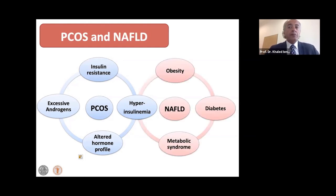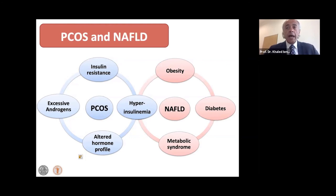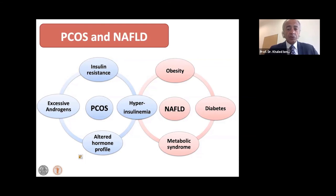It is reported that 40 to 50% of women with PCOS also have NAFLD, and this seems to be independent of whether their BMI is high or not. The reason for this association is suggested to be related to the altered hormonal profile, particularly the hyperinsulinemia, which may cause obesity and diabetes — all constituents of metabolic syndrome — which are all interlinked with NAFLD.